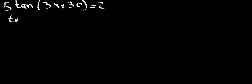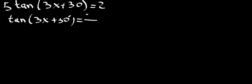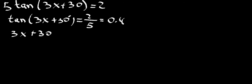We start by rearranging the equation so we have the tan on its own. So tan of 3x plus 30 degrees equals 2 over 5, which is 0.4.